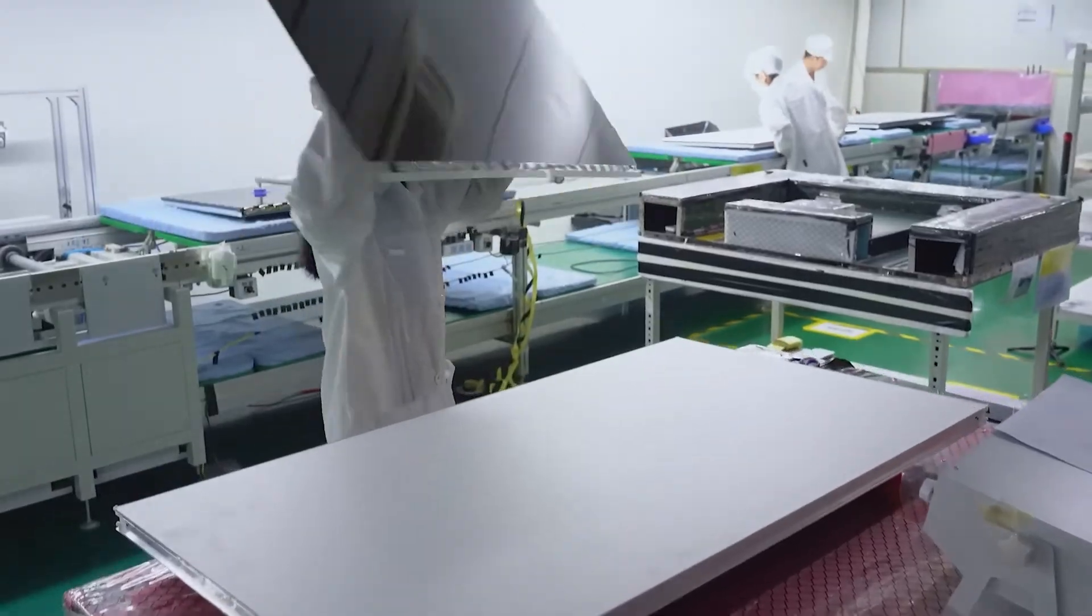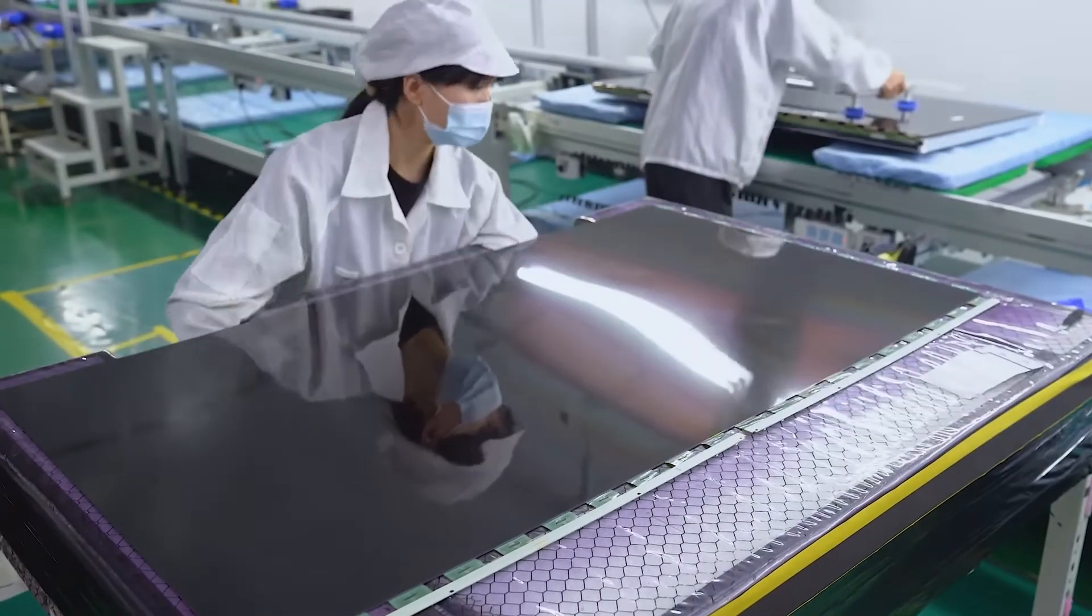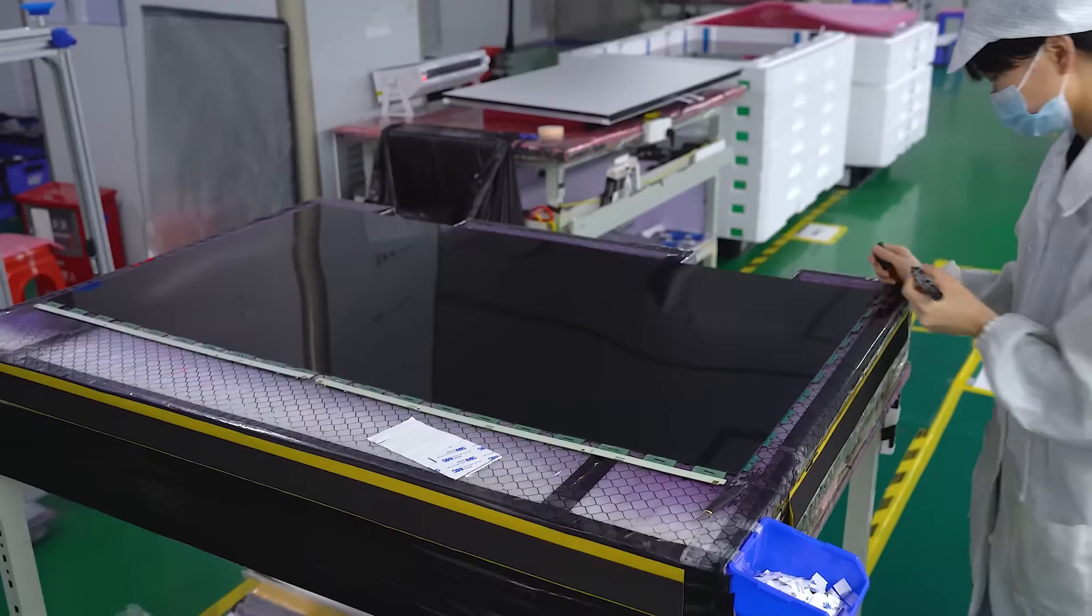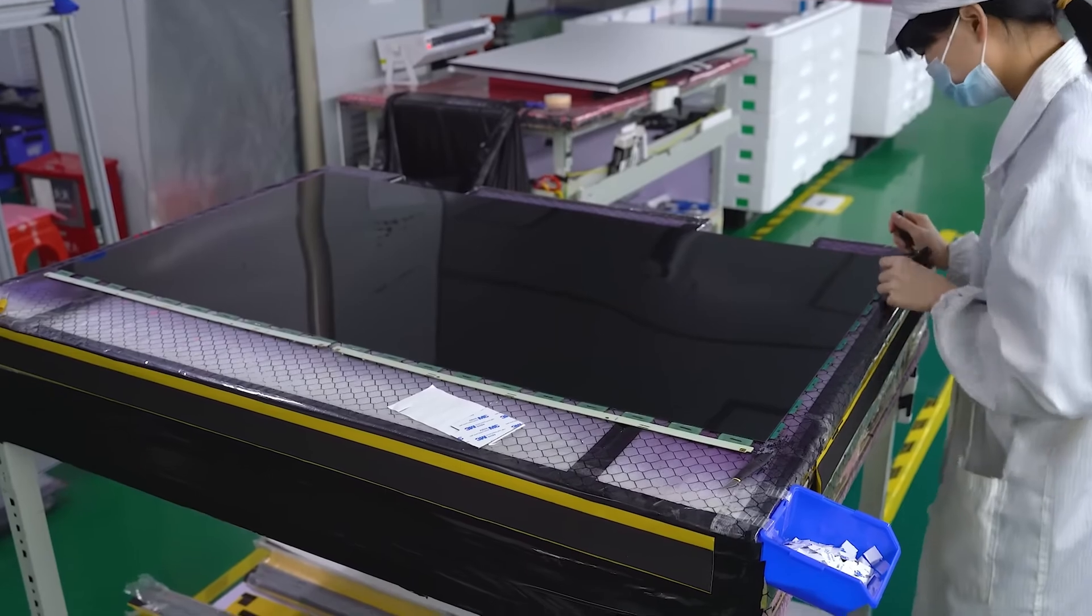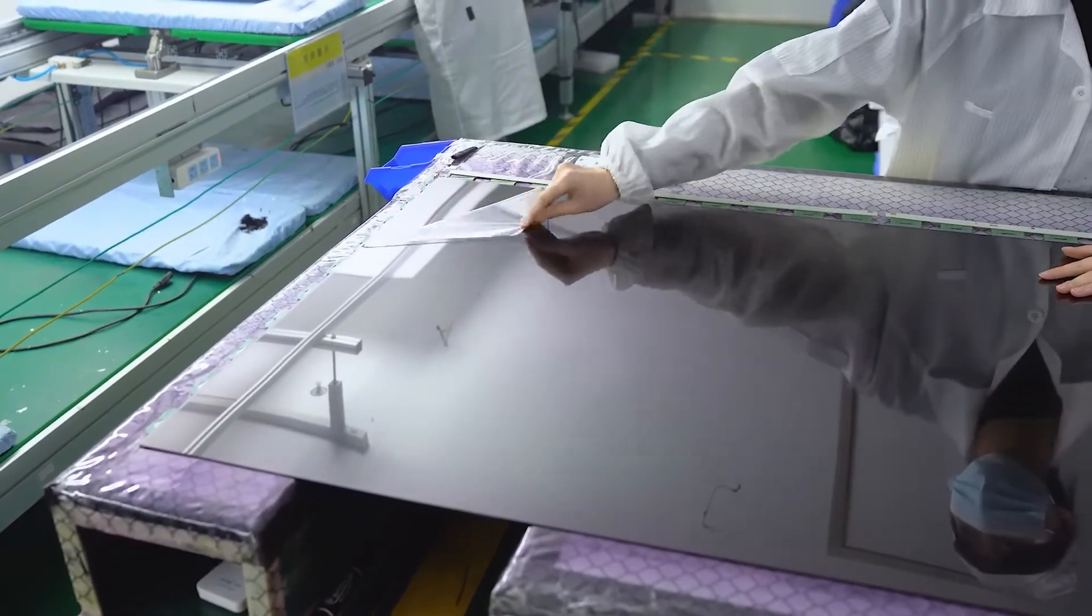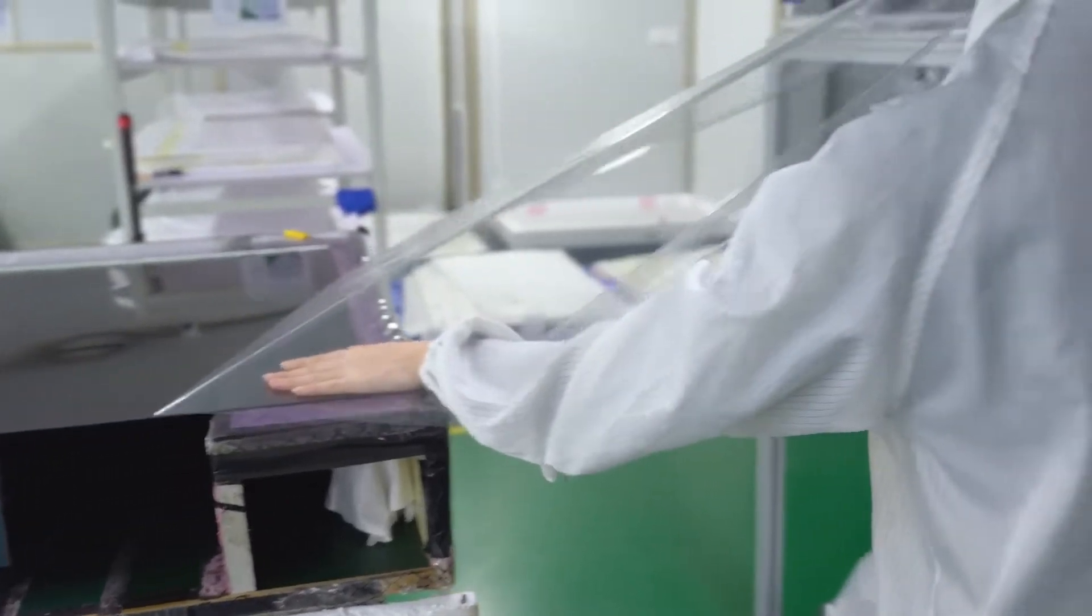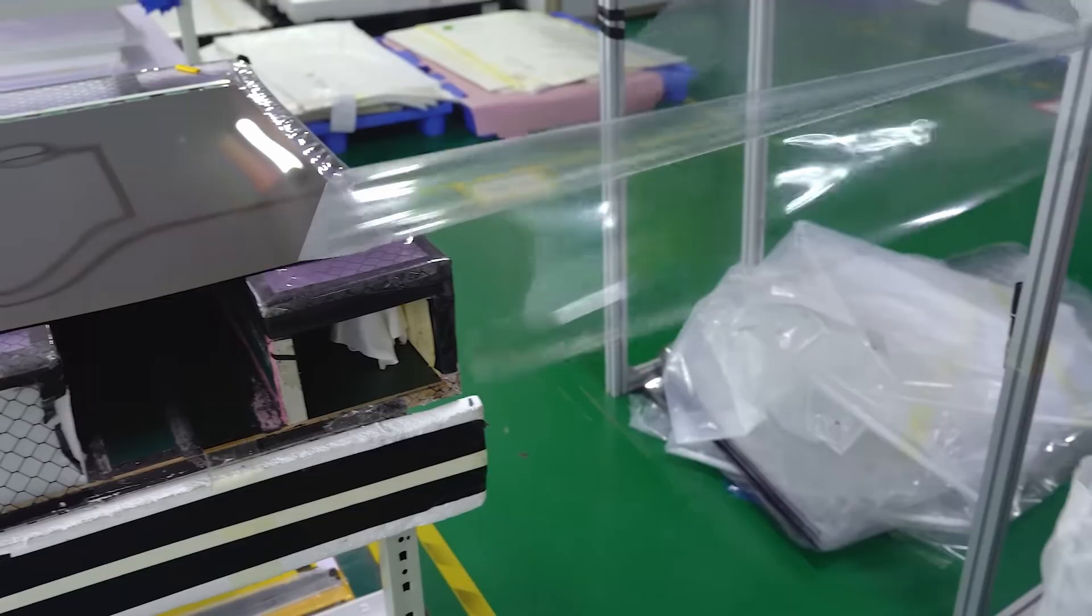With the TFT array and color filter in place, the next step is the assembly of the LCD cell. This involves sandwiching a layer of liquid crystals between two glass substrates. The liquid crystals are injected into the cell through a vacuum process, ensuring that they are evenly distributed without any air bubbles, which could interfere with the display's performance.